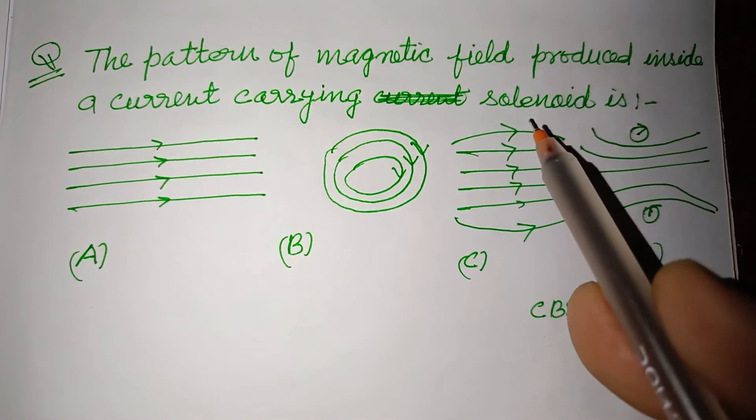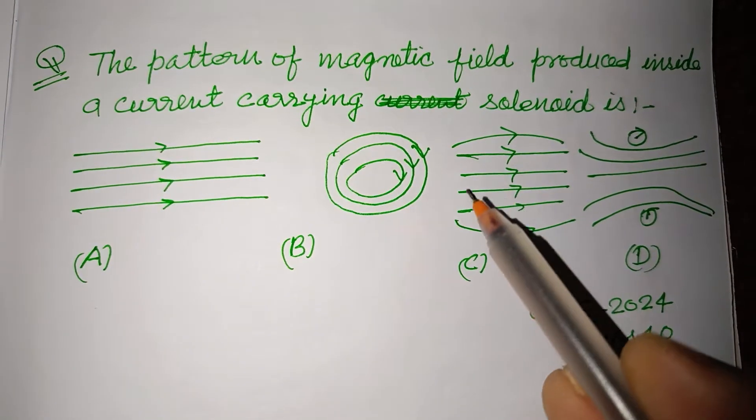The pattern of magnetic field produced inside a current carrying solenoid is?